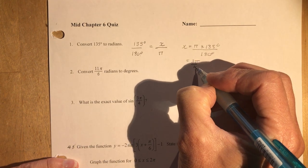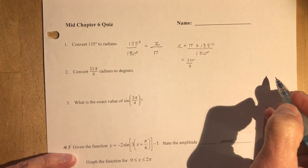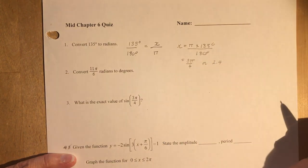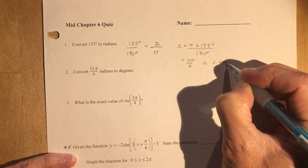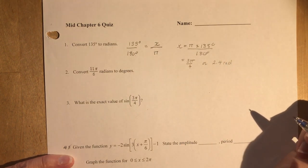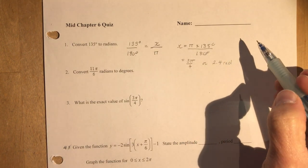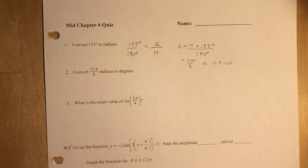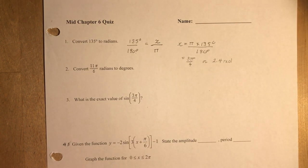So you could leave it like that, 3 pi over 4, or you may have used your calculator and got 2.4 radians. Some teachers like you to put rad after it. If you know what the question's asking for radians, it would be assumed that that would be in radians, but you might want to check with your teacher as to how he or she would like you to express that.